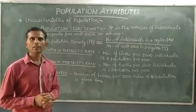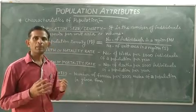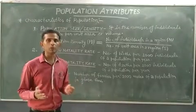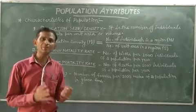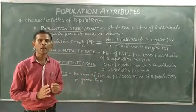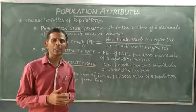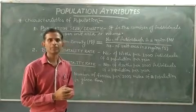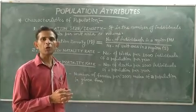First of all, we will discuss about the population. In biological terms, the population is a group of individuals. It is the total number of individuals of a species which live in a specific geographical area, which can interbreed among themselves under normal conditions and produce fertile offspring. And they function as a unit of the biotic community.